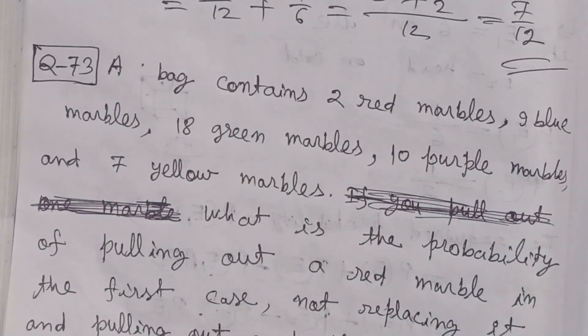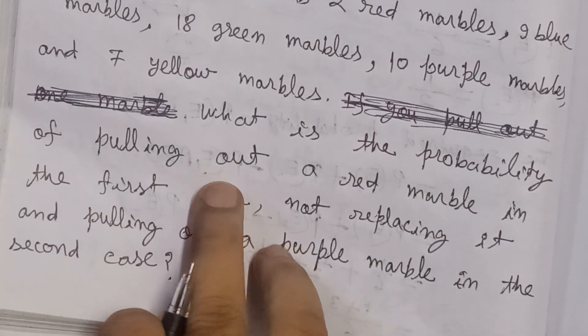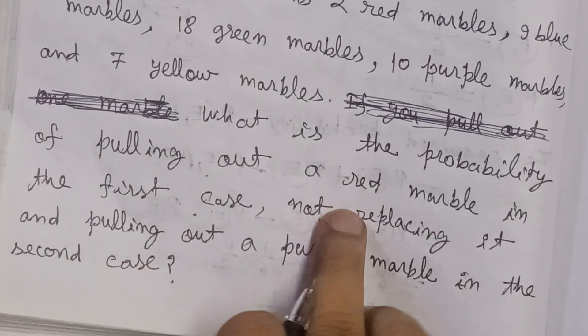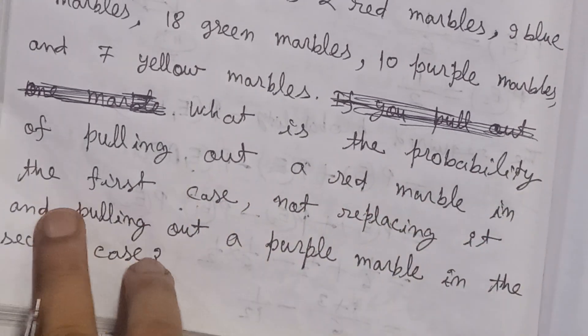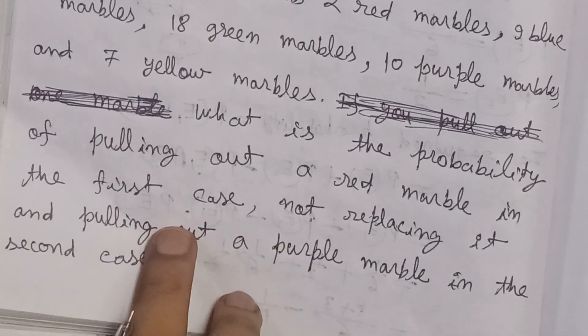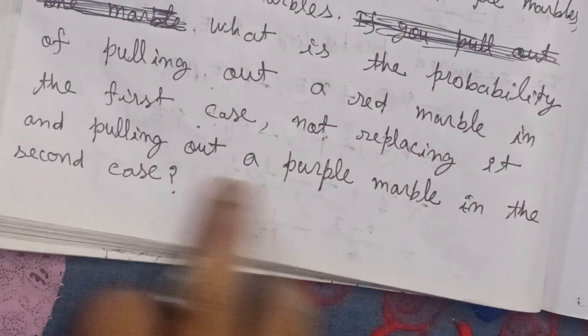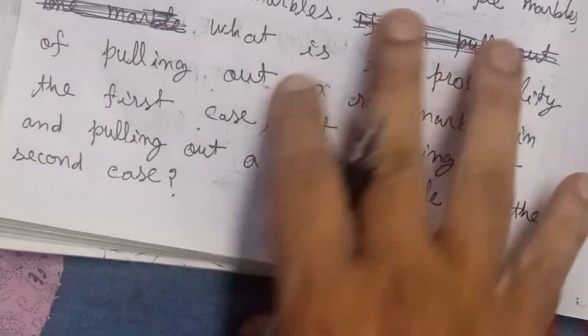Now combining both, the required probability we need to find is: the probability that from 6 marbles we draw, the first one is red, and after that we don't replace that marble, then the second marble we draw is purple. We need to find this required probability.